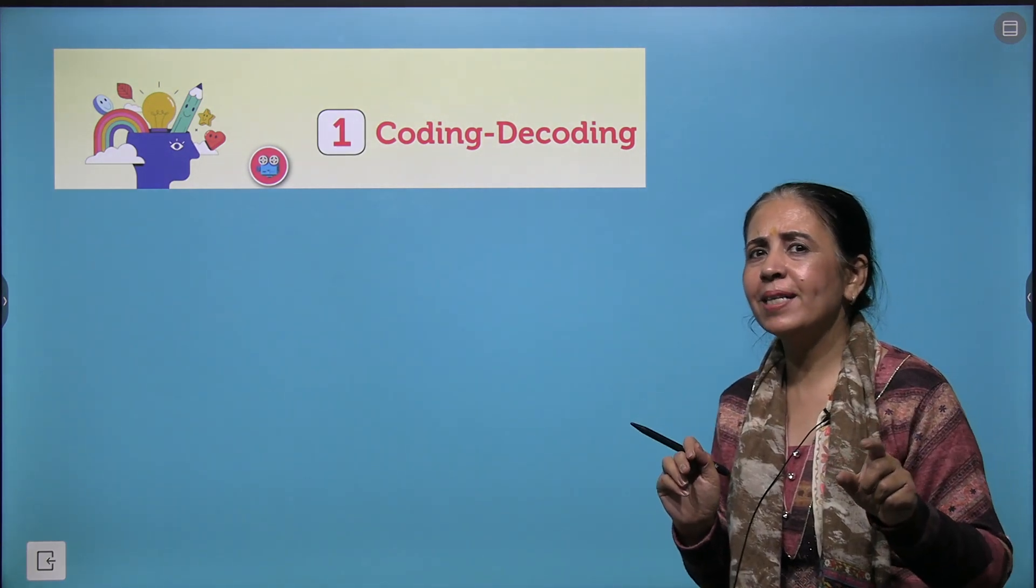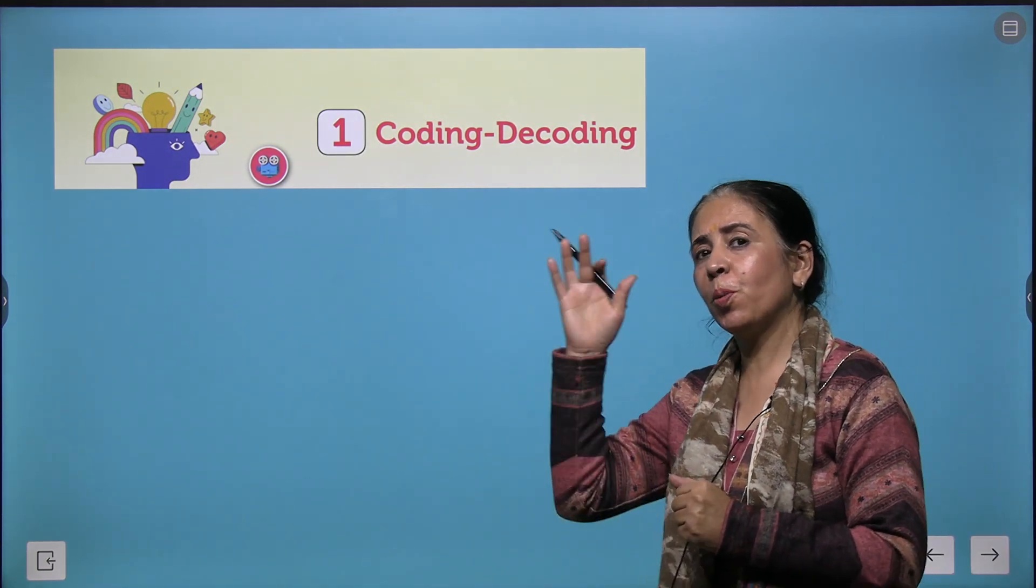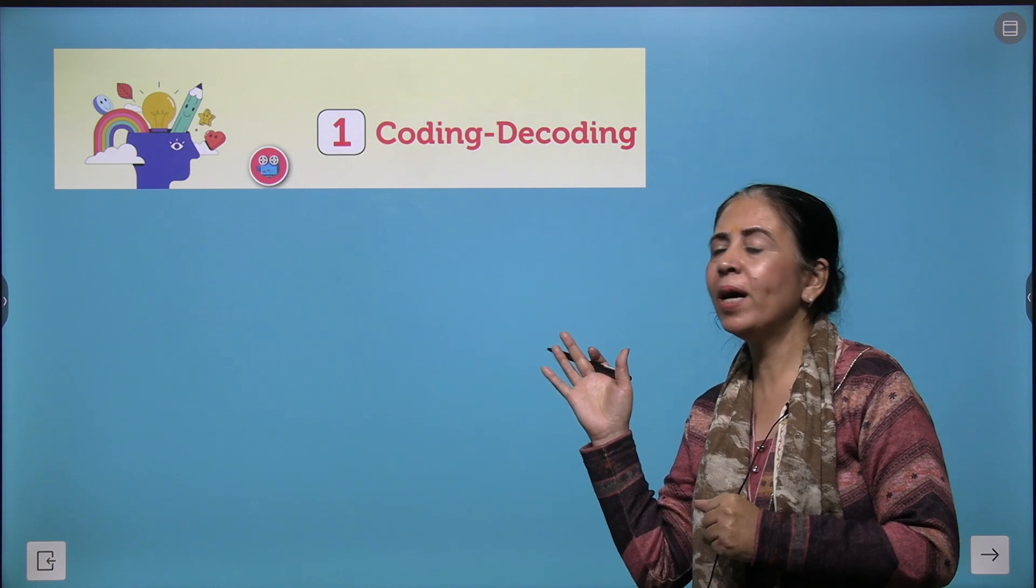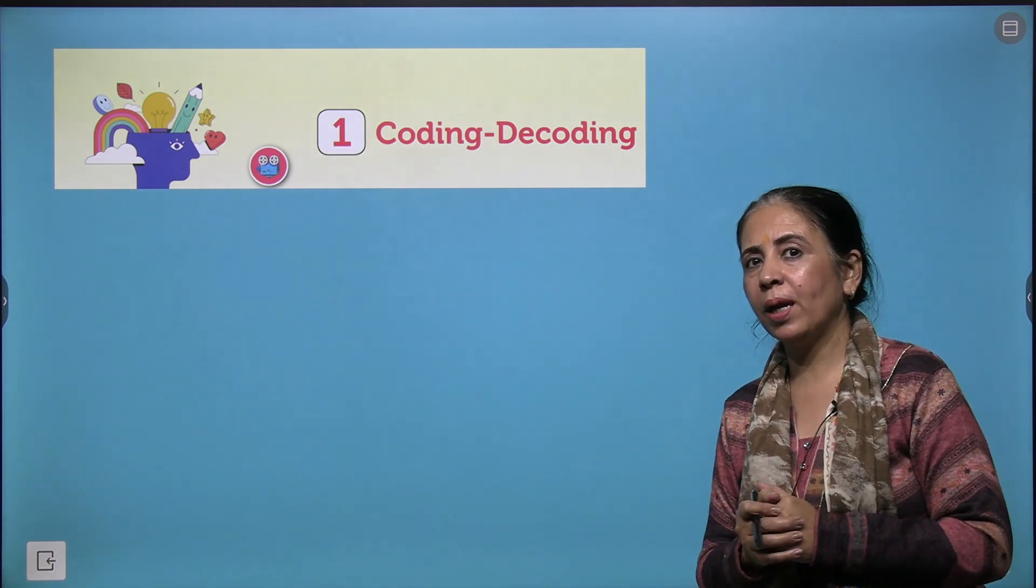Hi genius minds, this is your grade 6 aptitude and reasoning book. We are going to start with chapter number 1, that is coding-decoding.